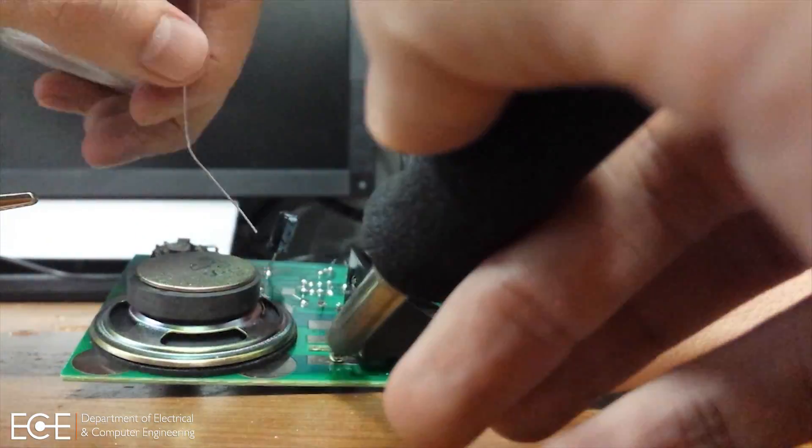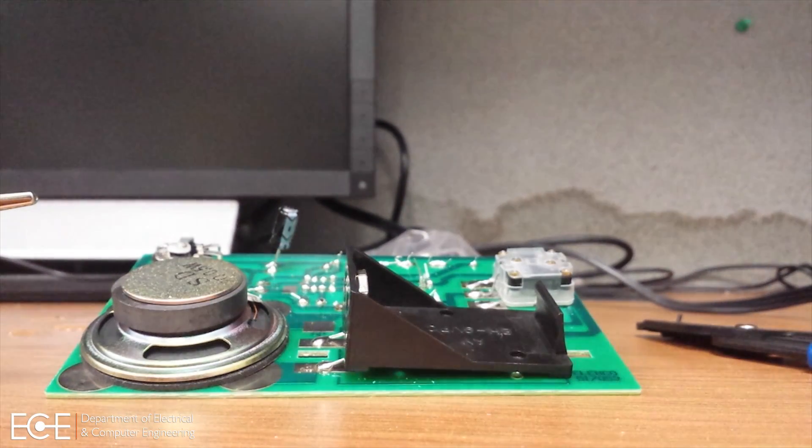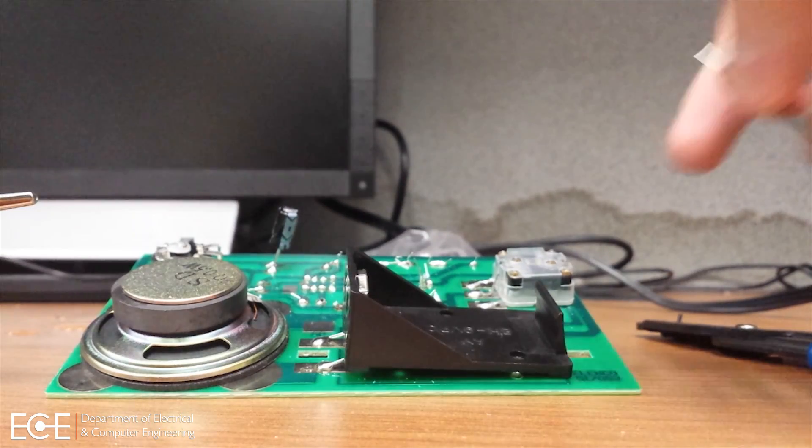Next we have to connect the leads of the speaker to the protoboard. In your kit you have a few jumper wires. Strip them and then connect the speaker leads to the board.